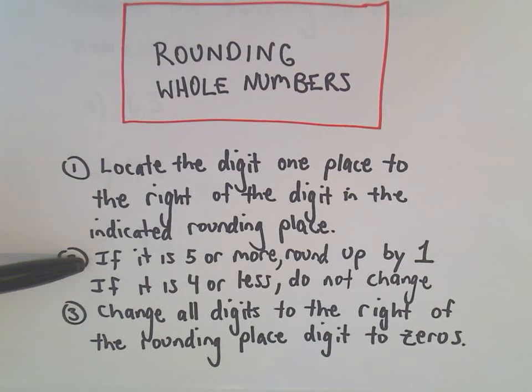If it's five or more, you basically round up that digit by one. If it's four or less, we leave it alone. And then we just change all digits to the right of the rounding place digit to zeros.